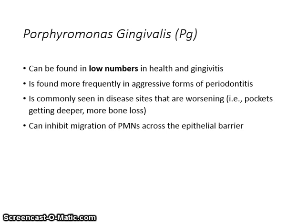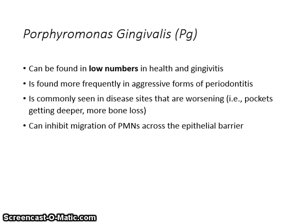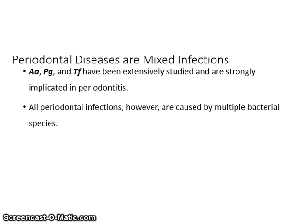Porphyromonas gingivalis, or PG, can be found in low numbers in health and gingivitis. It is found more frequently in aggressive forms of periodontitis. It is commonly seen in disease sites that are worsening, i.e., pockets are getting deeper and bone loss is increasing. PG can inhibit migration of polymorphonuclear leukocytes, or PMNs, across the epithelial barrier.